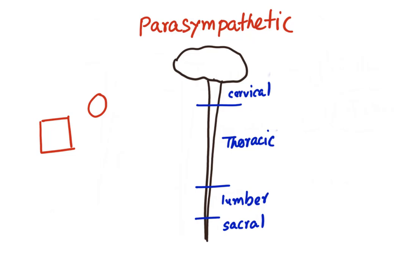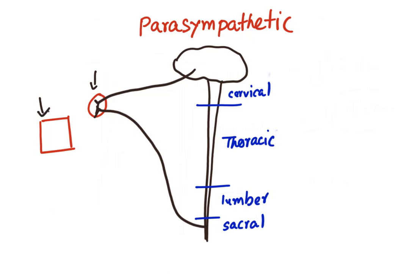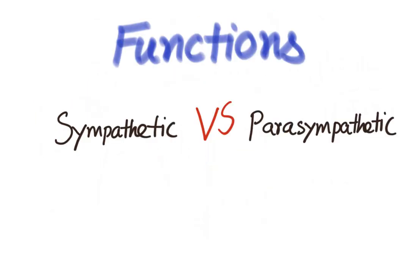In the parasympathetic nervous system, the pre-ganglionic fibers arise from the cranial nucleus and the sacral segments, so they are called craniosacral outflow. The ganglia are located close to the effector organs, as a result of which the pre-ganglionic fiber is long and the post-ganglionic fiber is short. Unlike the sympathetic nervous system, one pre-ganglionic fiber communicates with only one or two post-ganglionic fibers, and there is no communication with the adrenal medulla.